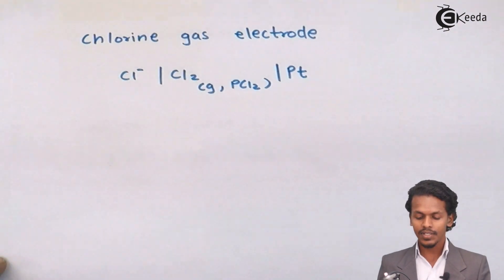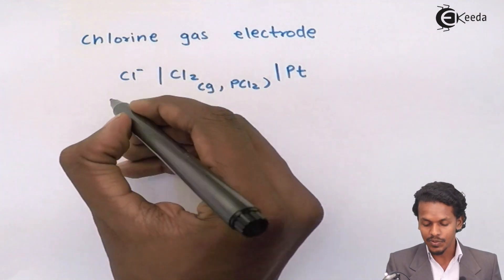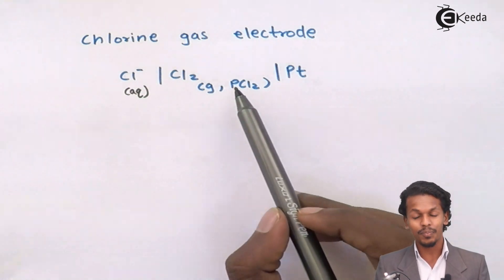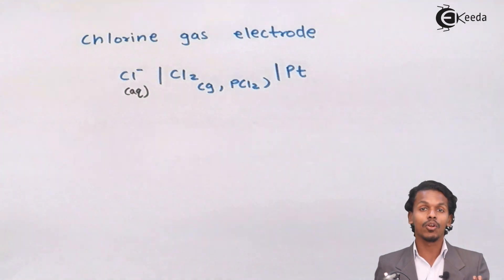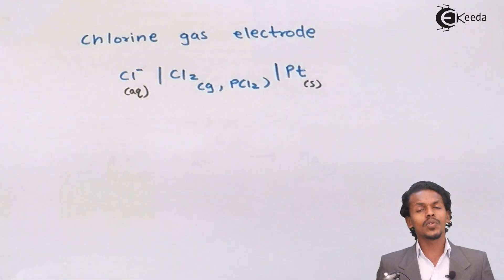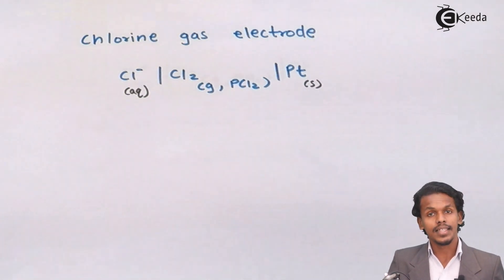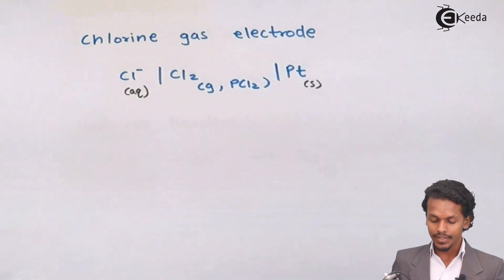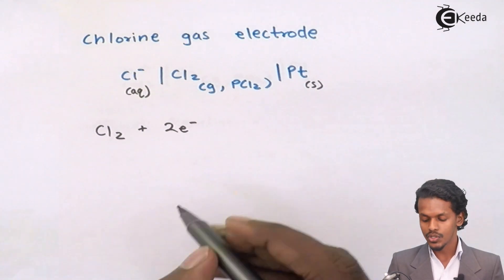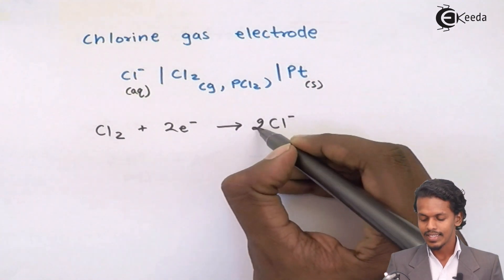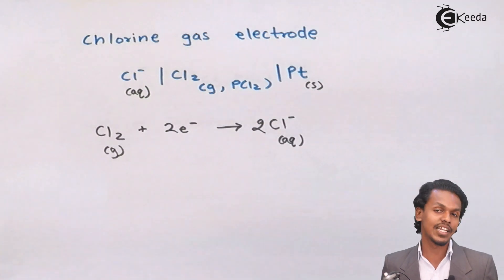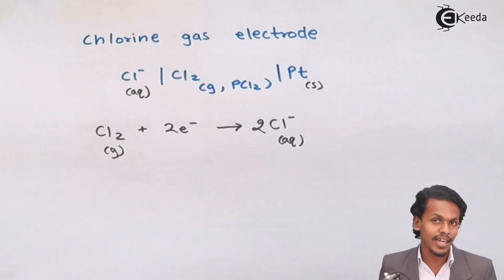Another example of a gas electrode is the chlorine gas electrode. Cl⁻ ions are present in aqueous solution, and Cl₂ gas is bubbled through at a pressure of p(Cl₂), again 1 or 2 atmospheres depending on conditions. Platinum is again used as the inert electrode. For a reduction process, the half-cell reaction is: Cl₂ + 2e⁻ → 2Cl⁻(aq). This is another example of a non-metal non-metal ion electrode.